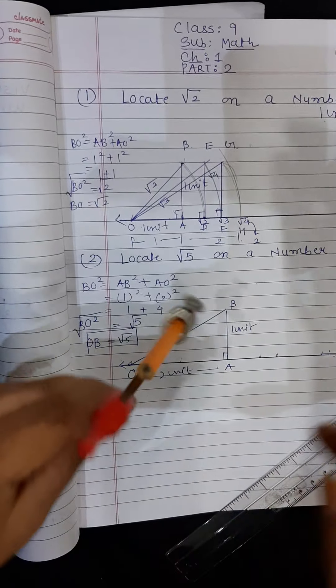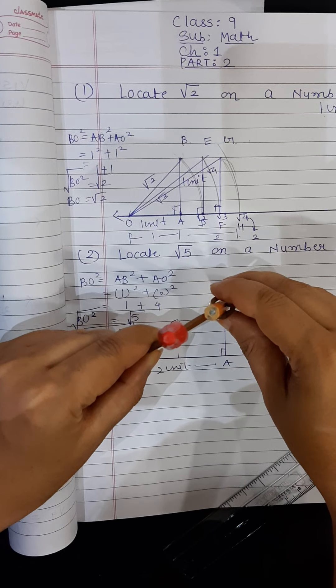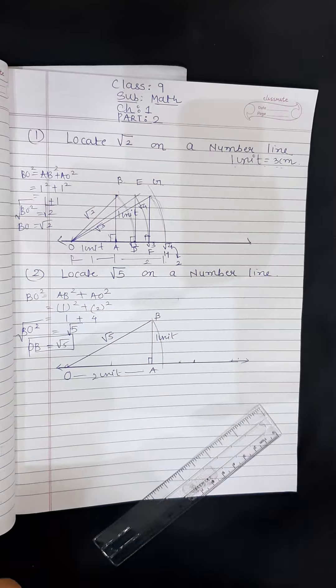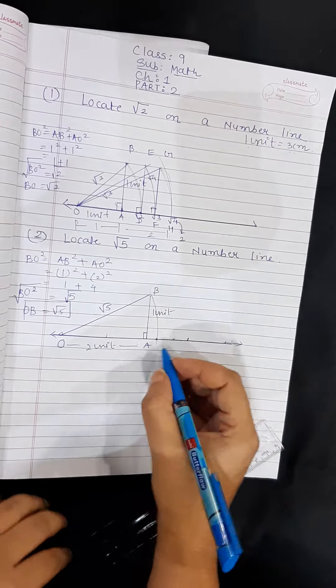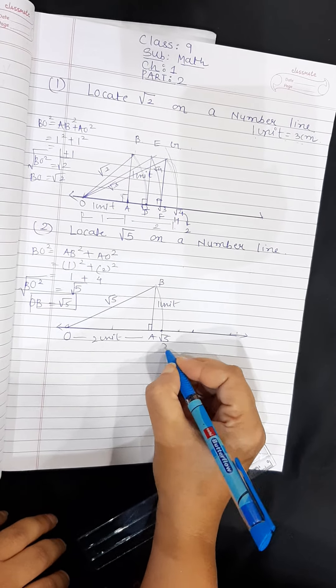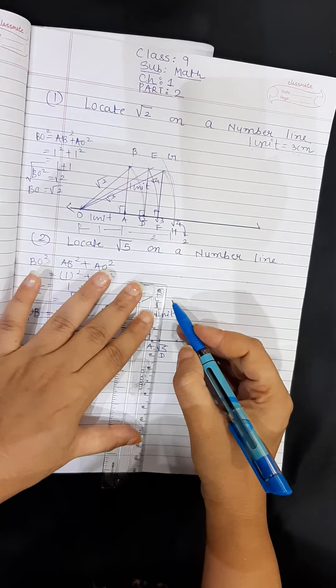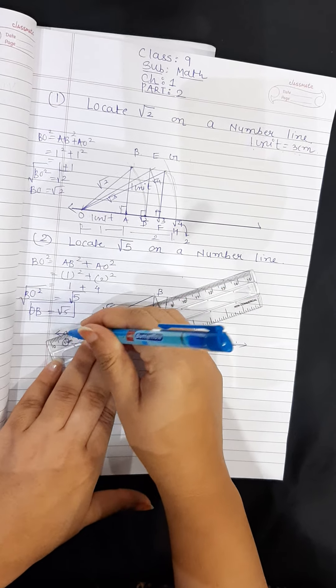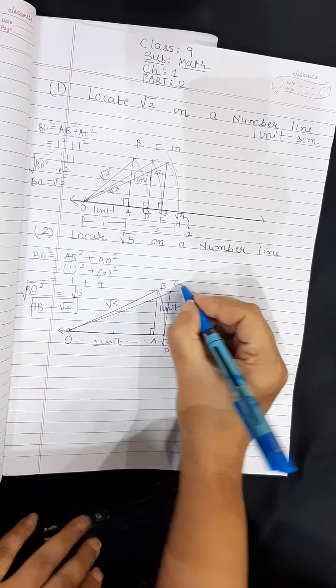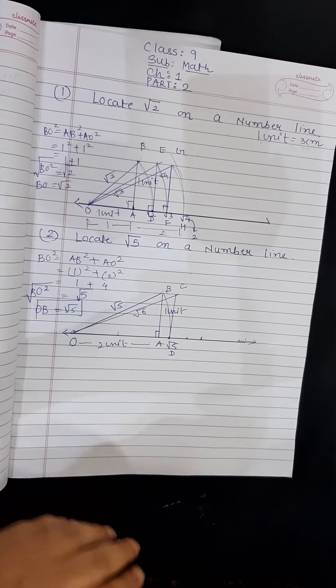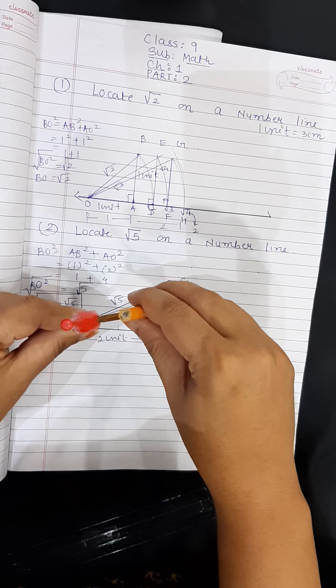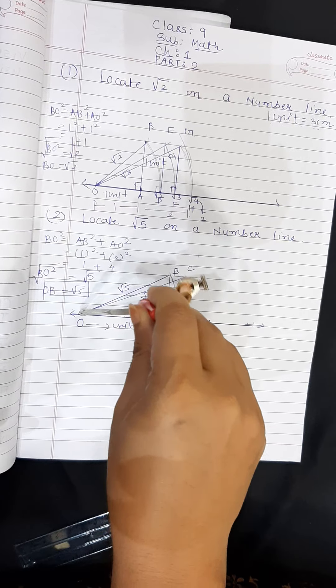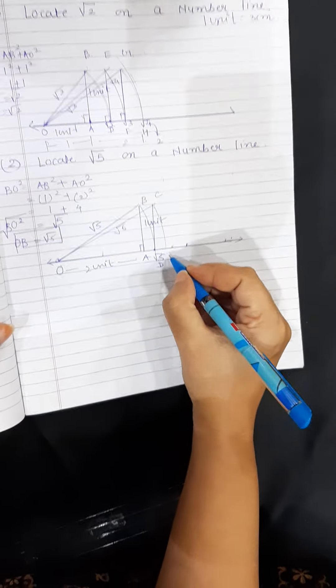Now I will measure this. I will take the radius of OB measure keeping O as a center. I will simply draw an arc on the number line. So this number line where this arc touches, that is my root 5 and I will mark this as D. Again I will go ahead with this. I will join these 2 lines. So easy it is. And here I will mark C. This will be my root 6. If they ask you to show the calculation, you have to show the calculation. Here I am showing the calculation just for your understanding. So again this will be root 6.